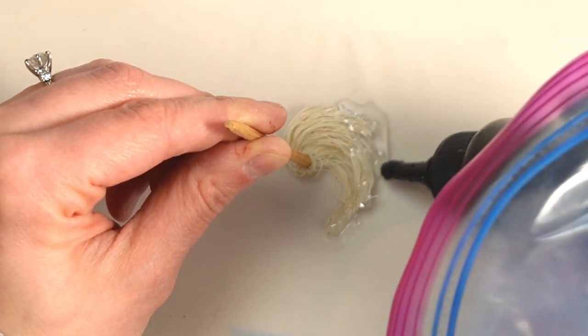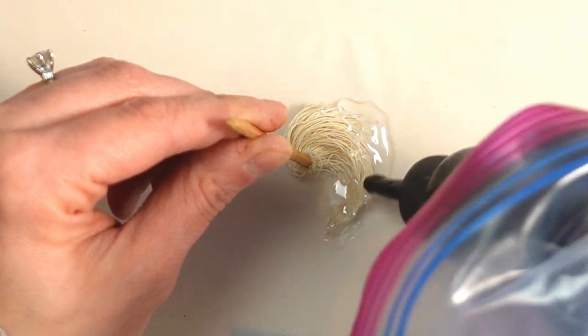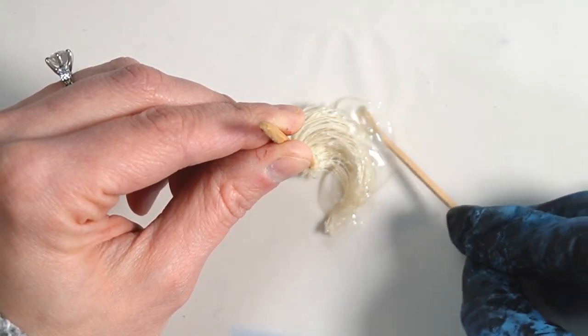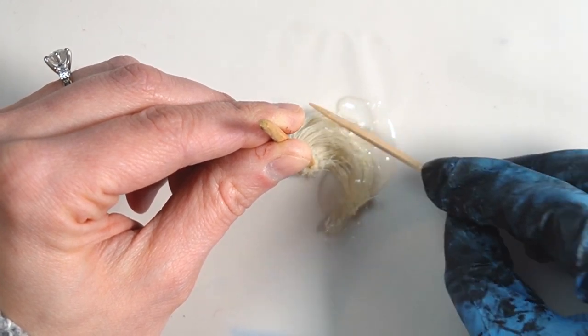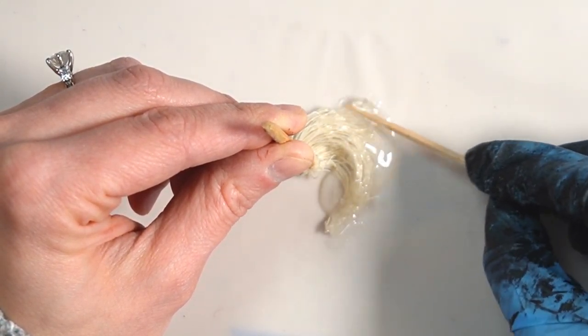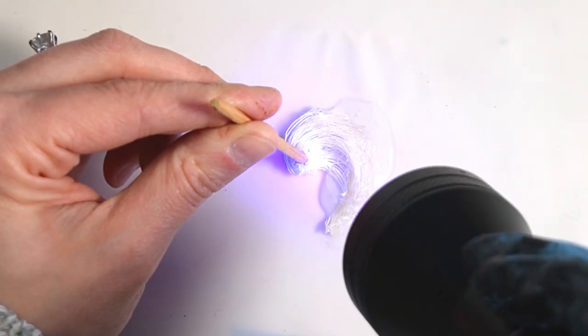After I cure that first bit I add a bit more and in order to thin out my puddle and make it look a bit more realistic I pull it around with my toothpick and I also add some more UV resin to the mop yarn to make it look wet.